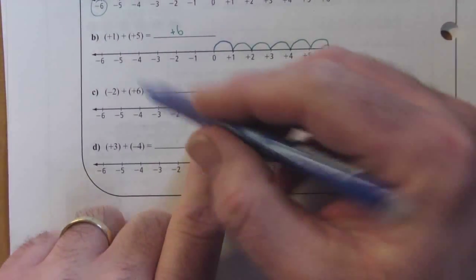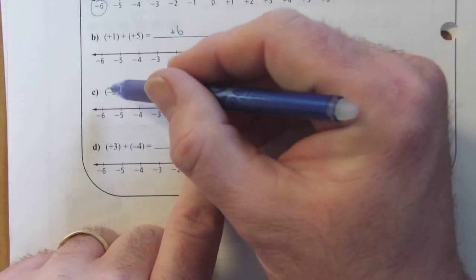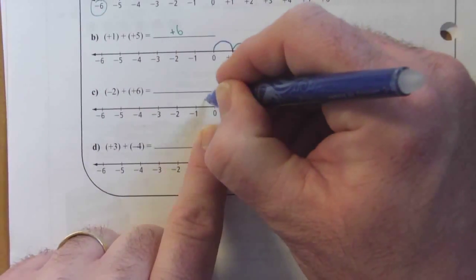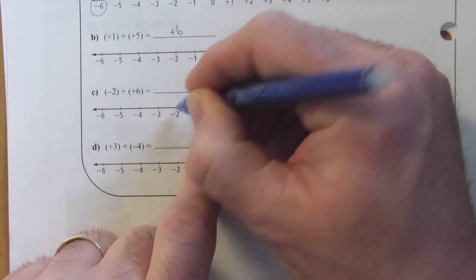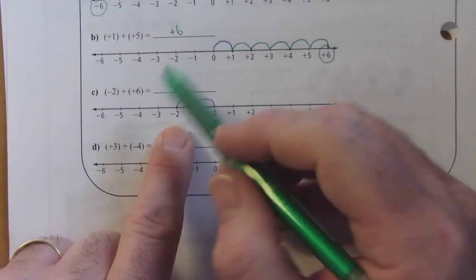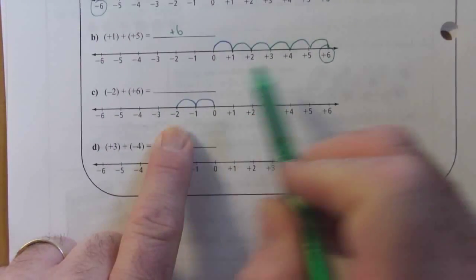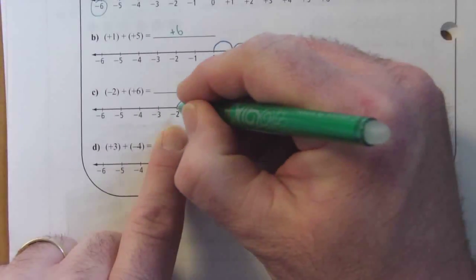Now, next one, start at zero. Negative, so I'm moving left, and it's going to be two leaps. One, two. The next one is positive, so I'm going to move to the right. Six leaps.